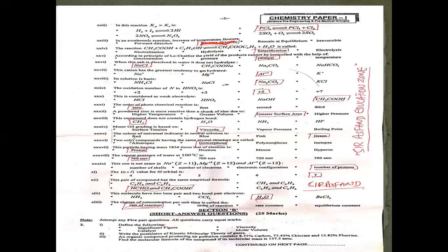The vapor pressure of water at 100°C: at 100°C water is at its boiling point. At the boiling point, the liquid vapor pressure equals atmospheric pressure, so the answer is 760 mmHg.